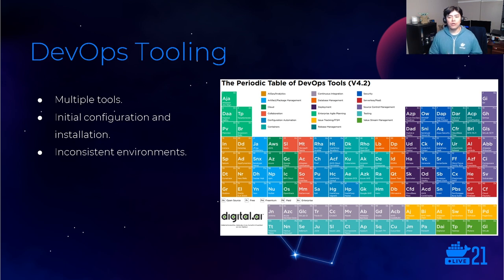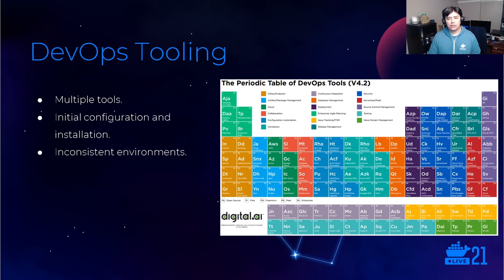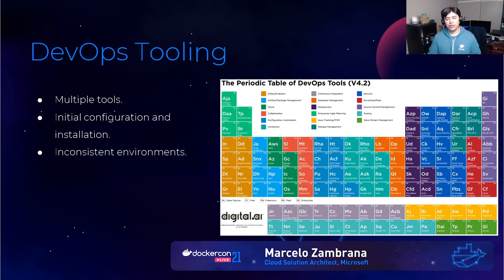The initial configuration, onboarding, and installation is also a problem. If you're part of a team, you need to make sure everyone has the same versions and the same configurations. If not, you will have a huge problem and your environments won't match. If you're using Terraform, for example, you need to make sure everyone in your team is using the same version — and the same goes for the Terraform providers they're using. This logic applies not only to Terraform, but to all of these tools: Chef, Ansible, Packer, all of them. One way I found to solve this problem is containers.